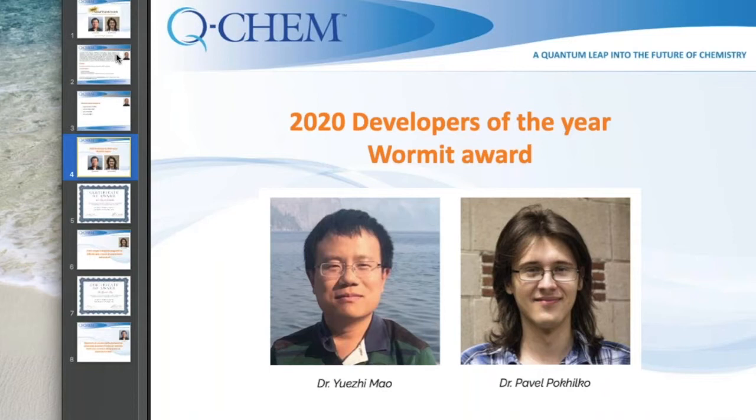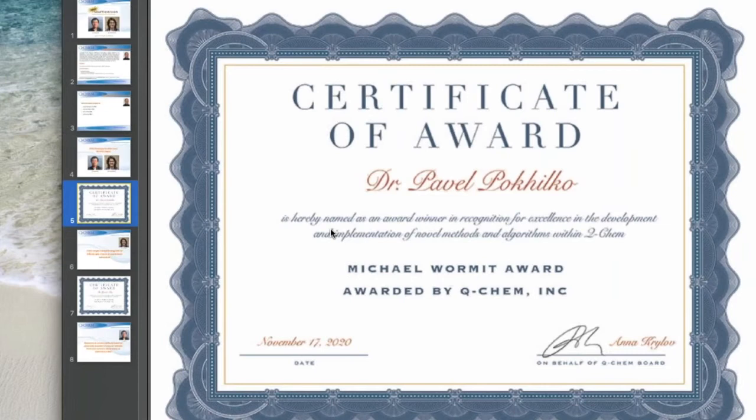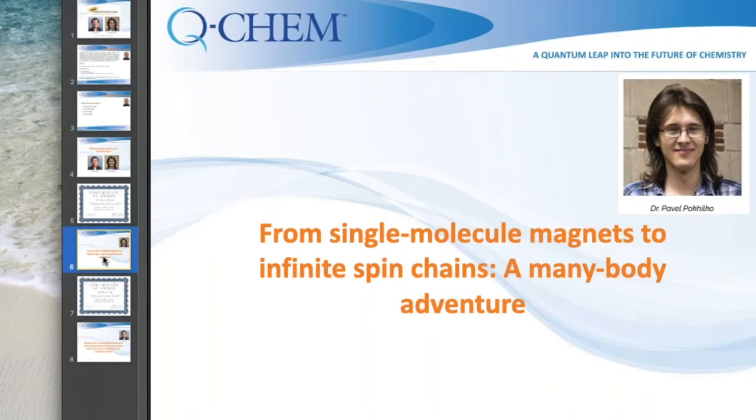Please join me virtually in thanking Yuji and Pavel for their contribution to the community and congratulate them on being selected as the recipient of the 2020 developers of the year Michael Wormit award. The first speaker today is Pavel. Pavel graduated from Moscow State University with honors. After that he moved to University of Southern California for his PhD under supervision of Anna Krylov.